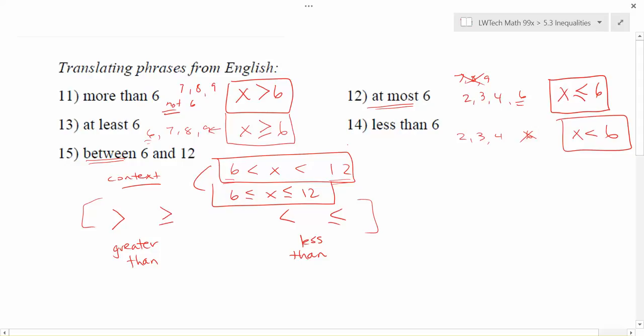Read a little bit more carefully in the context to decide whether you would include the equal to or not. But in either case, we do want to make sure that the six is on the left, the 12 is on the right, and we are using less than directions in order to indicate those inequalities.